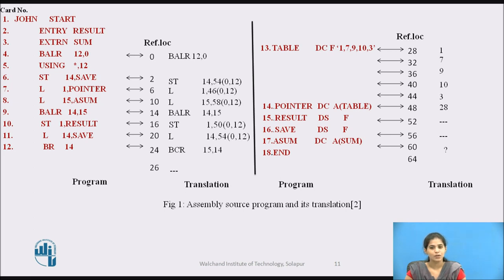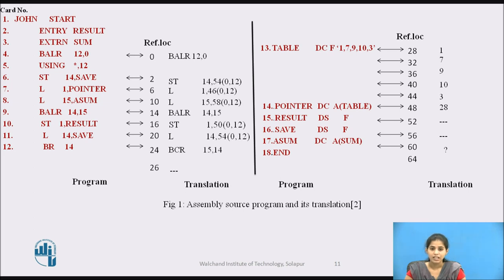At this point the assembler does not know the final absolute address of table since it has no idea where the program is going to be loaded. It knows that the address is the 28th byte from the beginning of the program, so the assembler puts 28 in pointer and informs the loader that the content of pointer is incorrect if this program is loaded anywhere except absolute location 0. For instance, if loaded at location 2000, the loader would change the content of pointer to 2028.